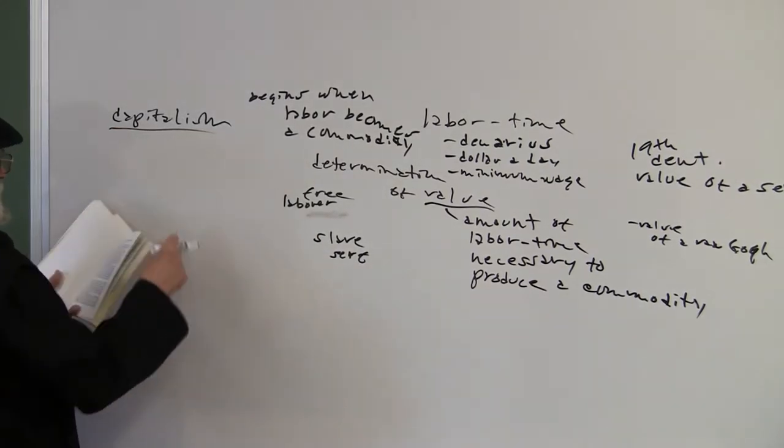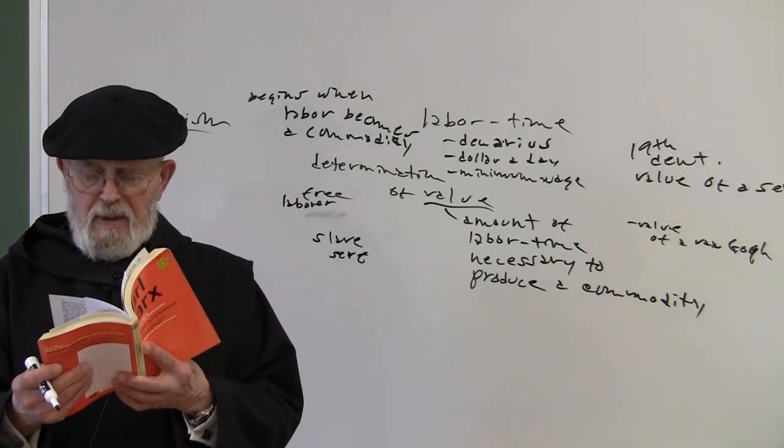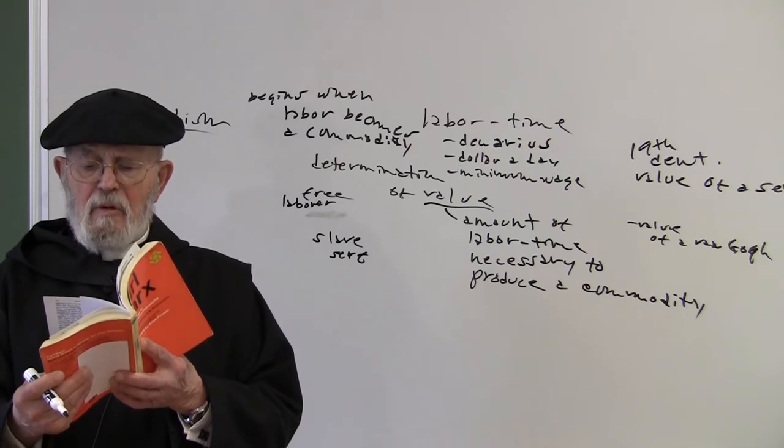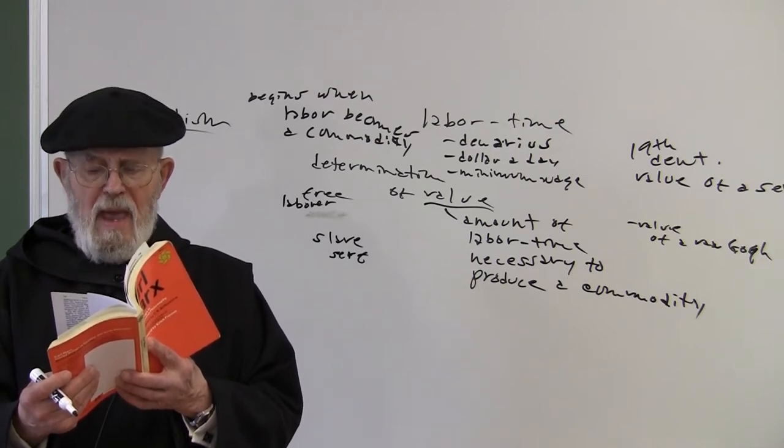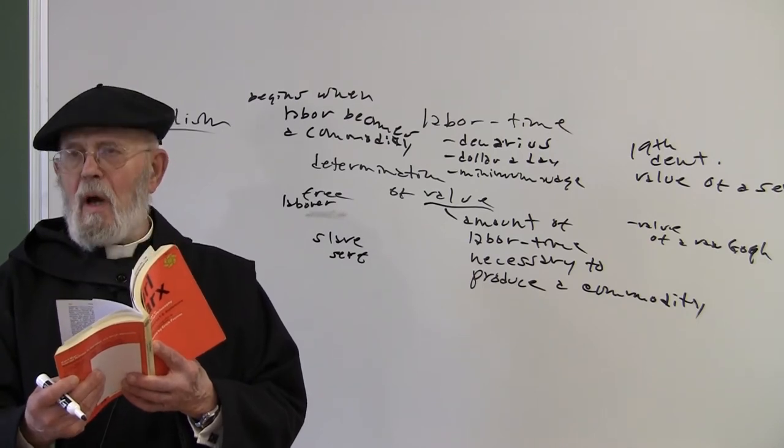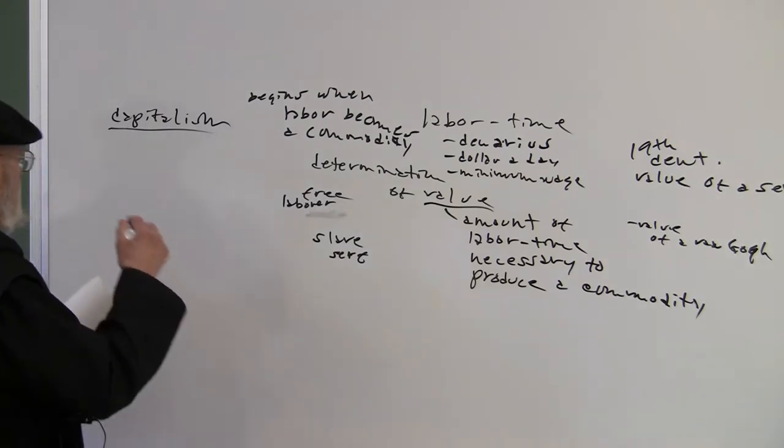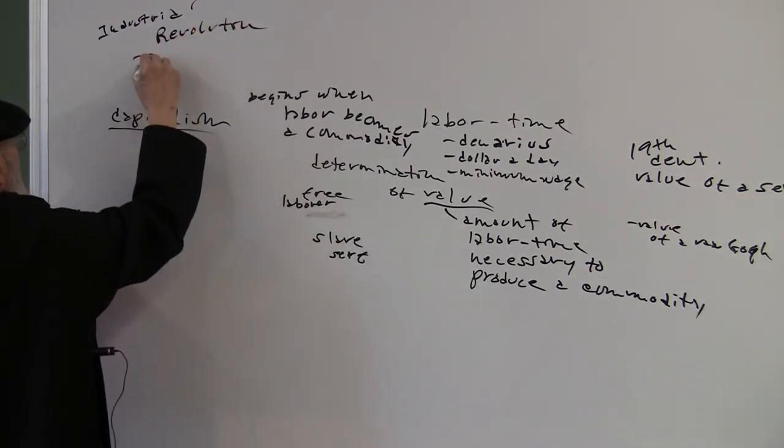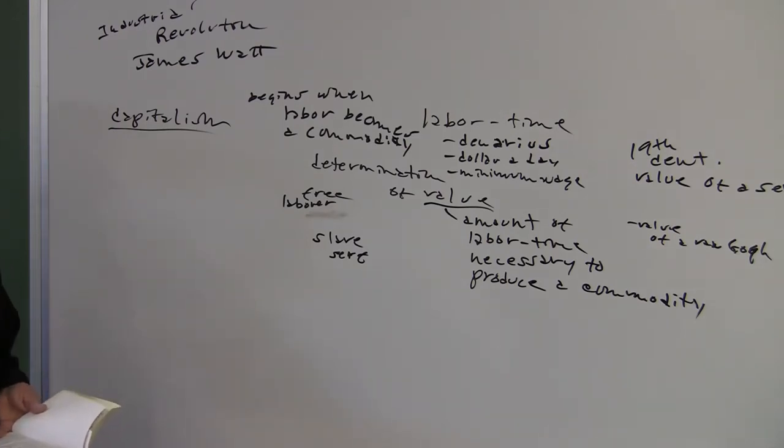Remember what capitalism is. Over on page 127, paragraph three down. Meantime, the markets kept ever growing, the demand ever rising. Even manufacture no longer sufficed. Thereupon, steam and machinery revolutionized industrial production. Remember the industrial revolution. James Watt discovered the steam engine in 1769. That's when he patented it.